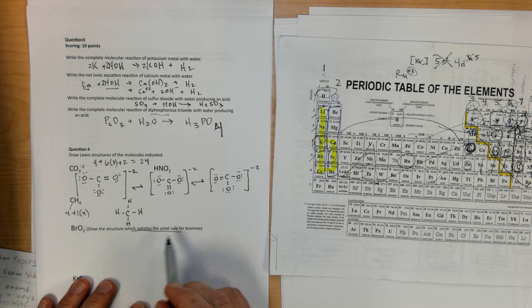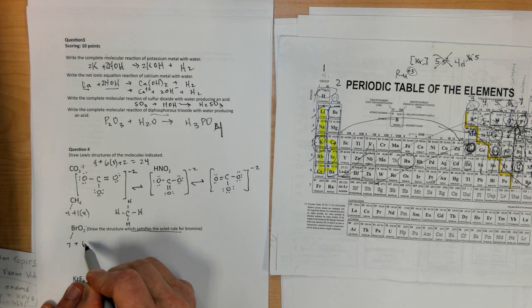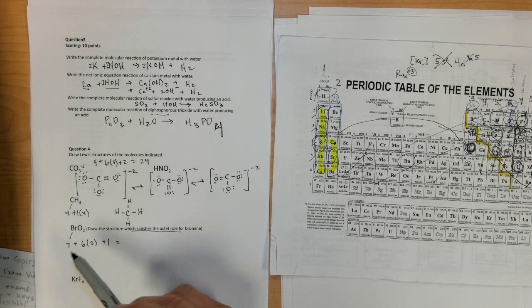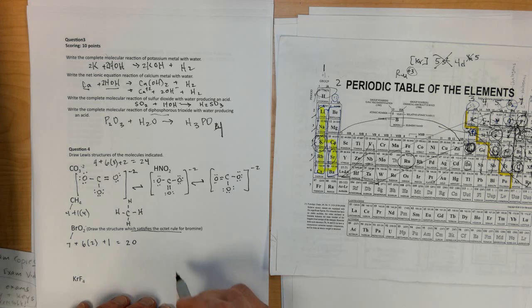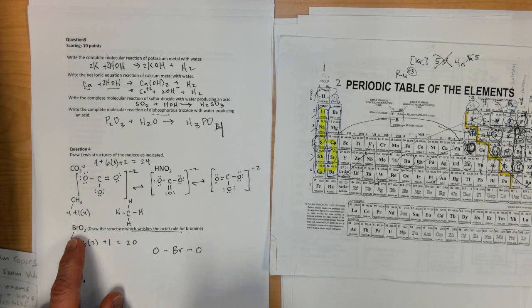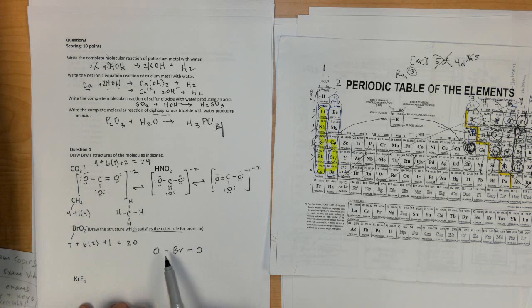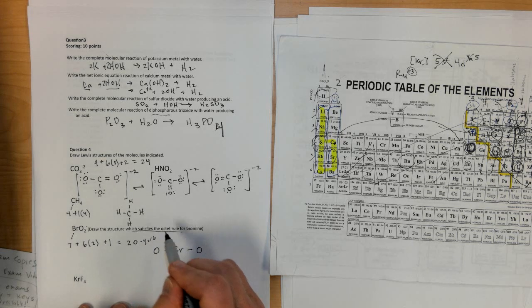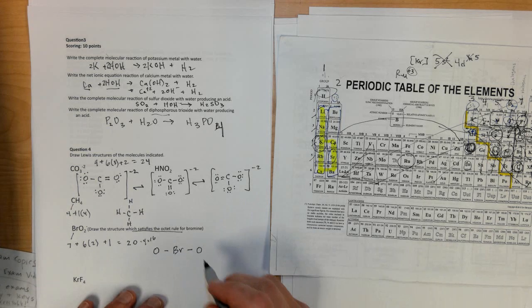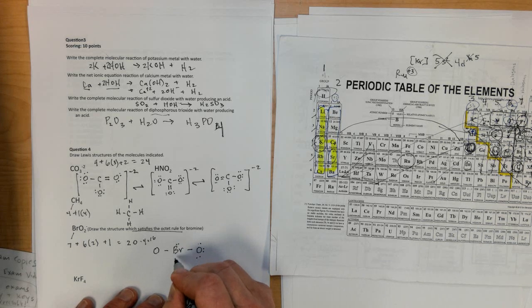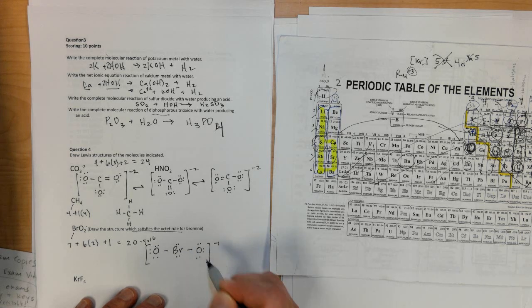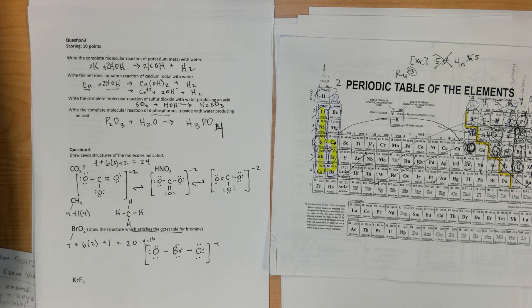BrO2 draws the structure that satisfies the octet rule. Bromine, 7. Oxygen, 6. There's two of them. And I need one more because there's a little negative sign up here. 12 plus 7 is 19. Plus one more is 20. Put bromine in the middle because it's much less electronegative than oxygen. And it's listed first in the formula. So there's a good chance that it goes in the middle. 2, 4. 20 minus 4 is 16 remaining. 2, 4, 6, 8, 10, 12, 14, 16 would complete the octet for everything. And then put brackets around it. And then put a little minus 1 sign in the upper right hand corner. And we have the BrO2 minus ions.